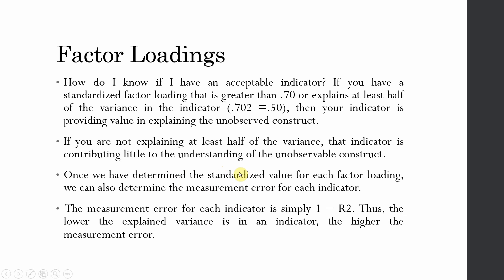Once we have determined the standardized value for each factor loading, we can also determine the measurement error for each indicator. The measurement error for each indicator is simply 1 minus R-square. Thus, the lower the explained variance in an indicator, the higher the measurement error and vice versa.